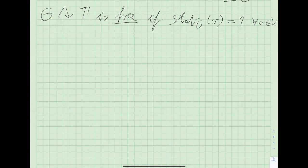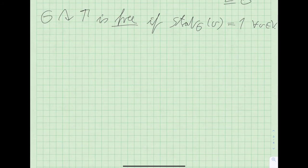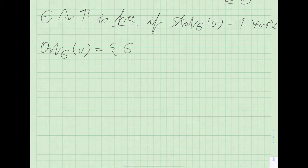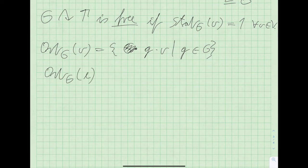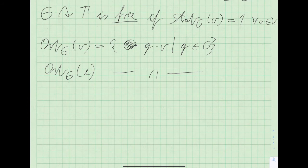We also need a notion of an orbit. The orbit of a vertex is the set you get by allowing every group element to act on that vertex — a subset of vertices. The orbits partition the vertex set, and we define orbits of edges similarly, which also partition the edge set.